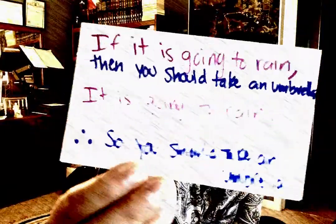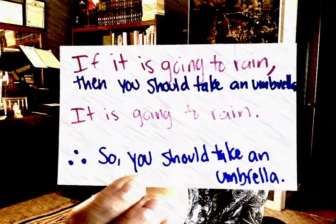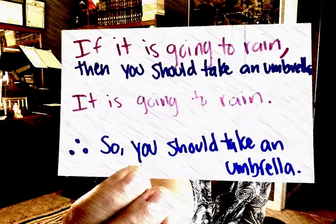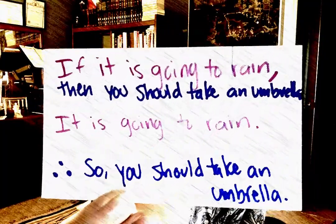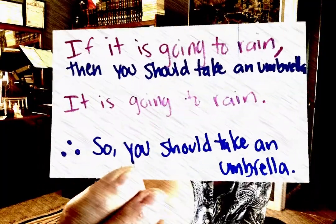Let's have another example. Seeing that there's a 90% chance of rain and then deciding to take an umbrella is doing an argument inside your head where the conclusion is an action — the conclusion is: take an umbrella. It's another modus ponens: if it's going to rain, you should take an umbrella. It is going to rain, so you should take an umbrella.